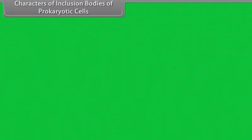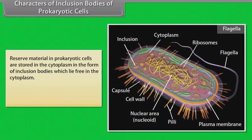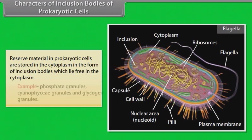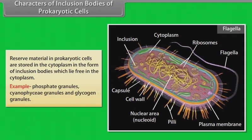Reserve material in prokaryotic cells is stored in the cytoplasm in the form of inclusion bodies, which lie free in the cytoplasm. Examples include phosphate granules, cyanophycin granules, and glycogen granules.